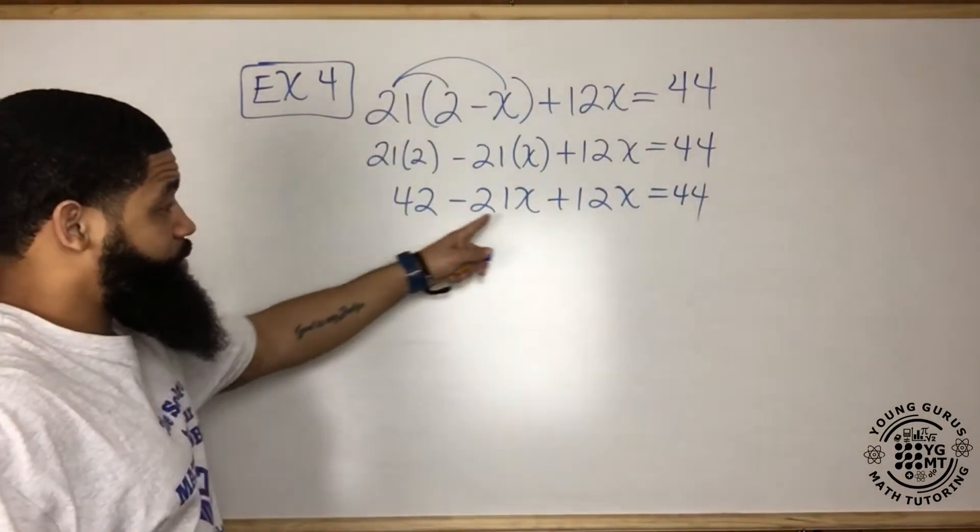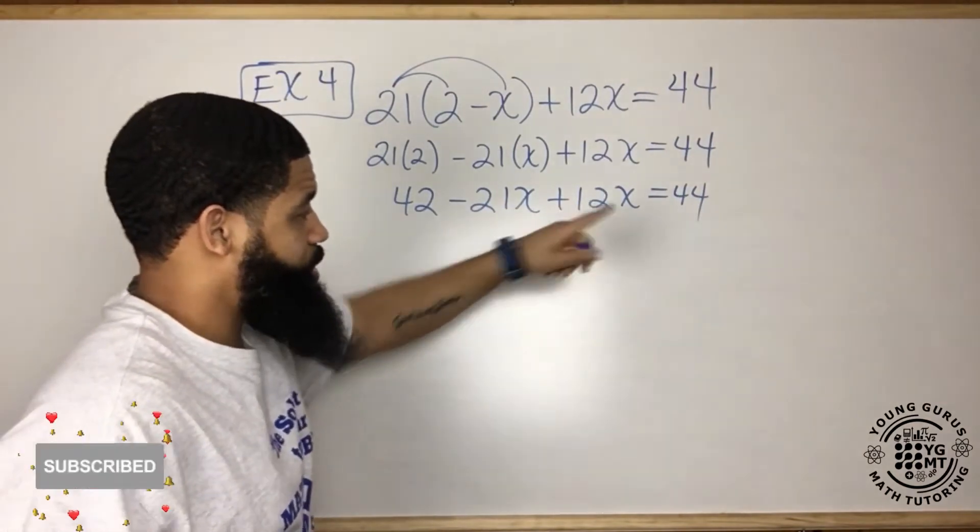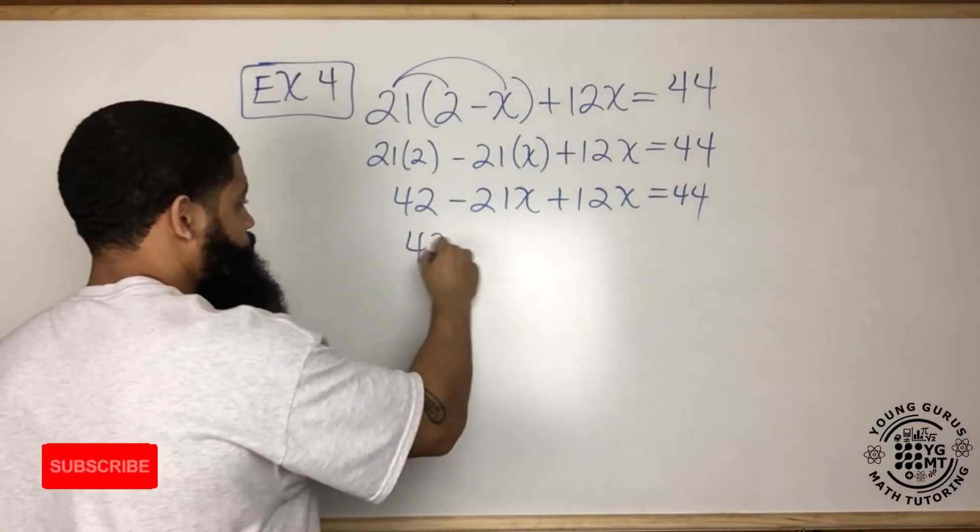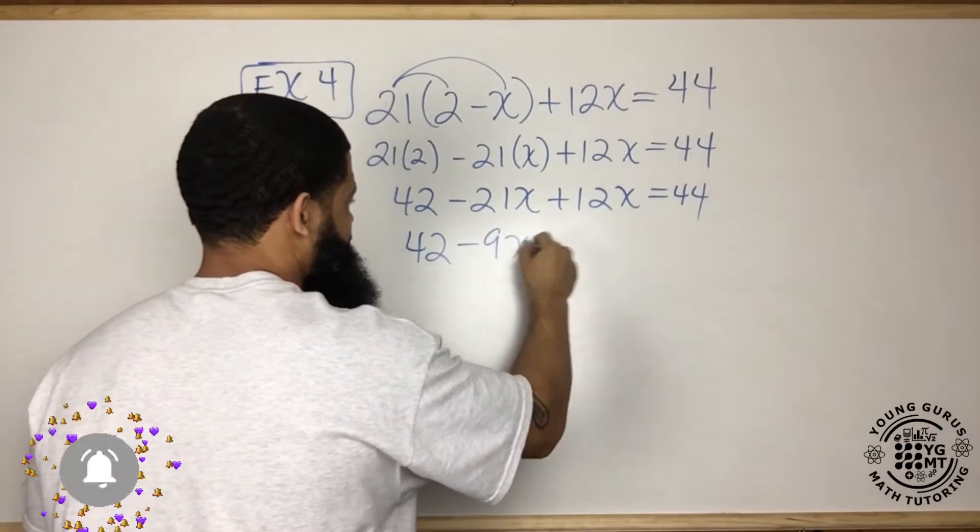Now we have like terms. So minus 21x plus 12x, so we have 42 minus 9x equals 44.